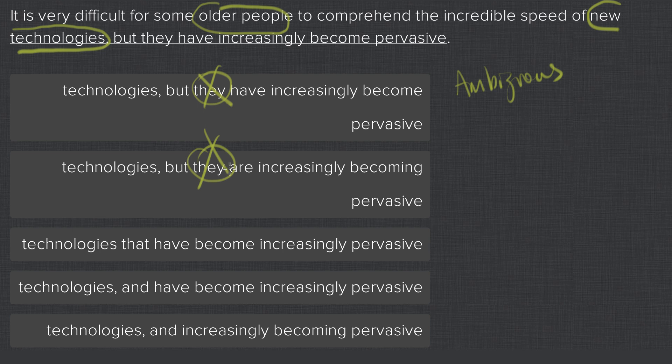The answer choice that fixes this is the third one. There's actually no pronoun. It just skips from 'technologies,' and then there's a modifier 'that have become increasingly pervasive.' This is a great modifier for technologies, and this is going to end up being your correct answer.